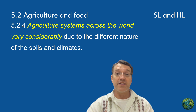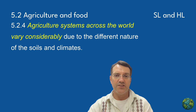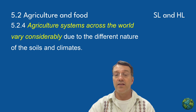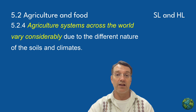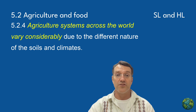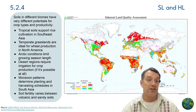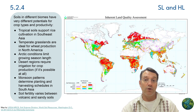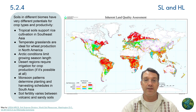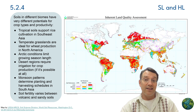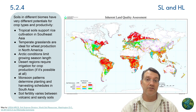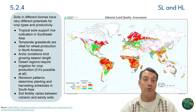Agricultural systems around the world vary tremendously due to differences in soils and climates. This isn't just about what grows where — it's about understanding that there's no one-size-fits-all approach to agriculture. Local environmental conditions shape everything from crop selection to farming techniques to seasonal patterns. This world map shows inherent land quality assessment — essentially how good the soils are for agriculture in different parts of the world. Tropical soils might support rice cultivation in Southeast Asia, while temperate grasslands are ideal for wheat production in North America. Arctic conditions severely limit growing seasons, and desert regions might require irrigation just to make agriculture possible.